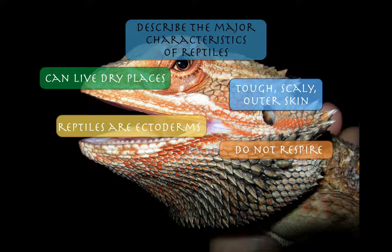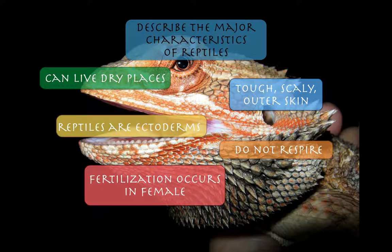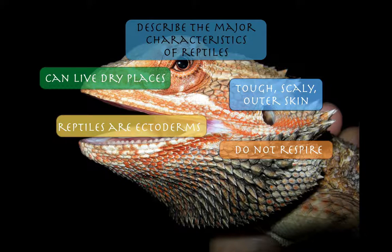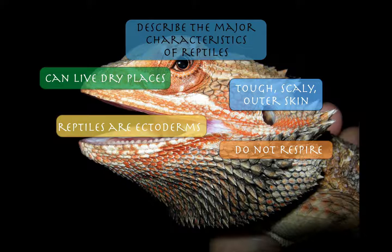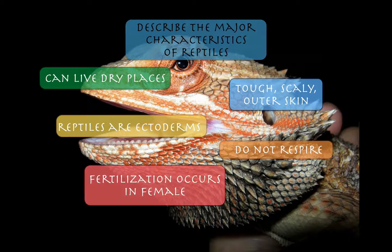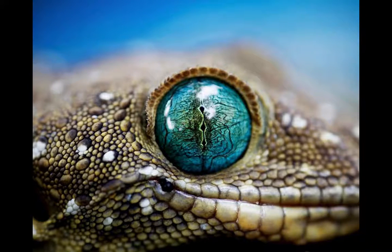Because they can't regulate their body heat internally, they back up during the heat of the day and typically hide out in shady, cool areas. Then at night they'll come out and hunt and do their activities. Internal fertilization occurs in the females as well. Those are some of the major characteristics for reptiles.